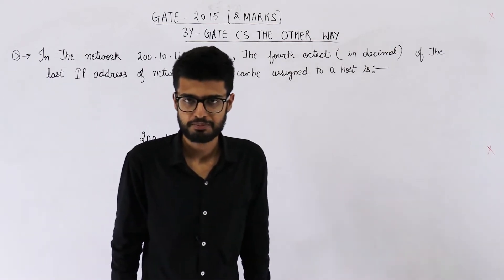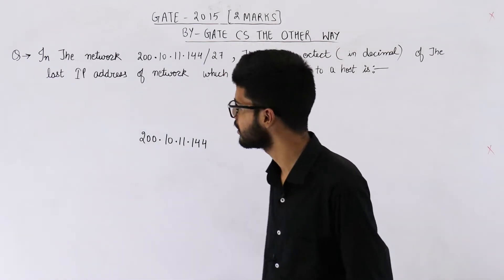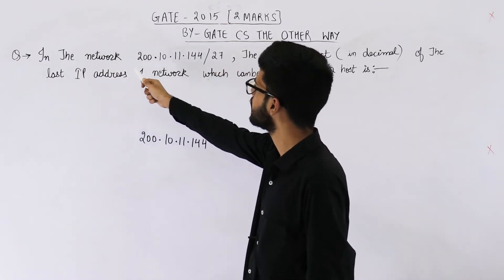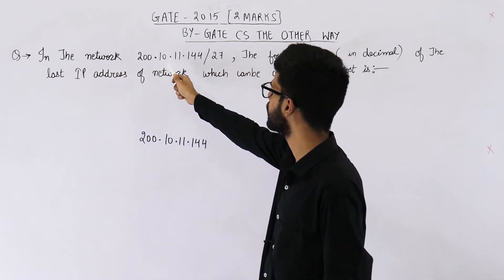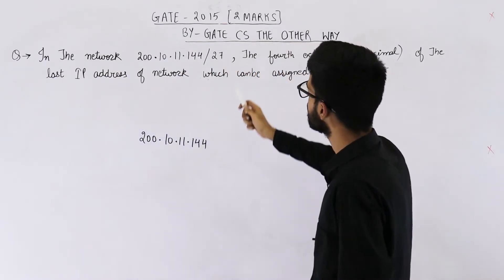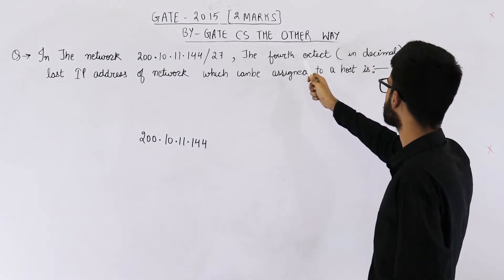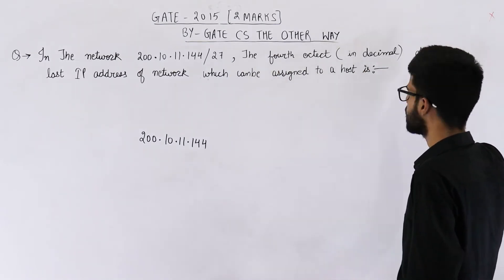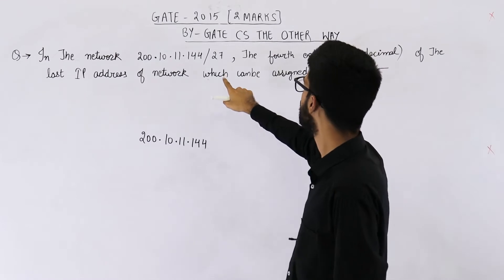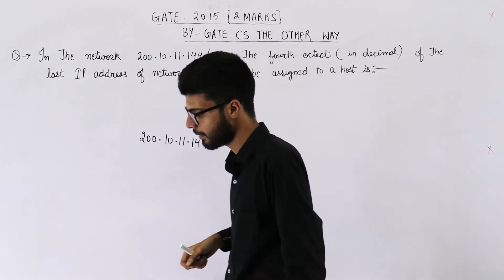Hello people, welcome back. Read this question from the GATE 2015 exam. It says: in the network 200.10.11.144/27, the fourth octet in decimal of the last IP address of the network which can be assigned to a host is?